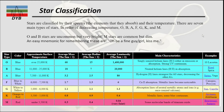An easy way to remember this classification is the sequence O, B, A, F, G, K, M. Looking at the classification in tabular form, the Sun belongs to the G type of star, with a temperature between 5,000 and 6,000 Kelvin. You can also review the other star types and their respective temperature ranges in the table.